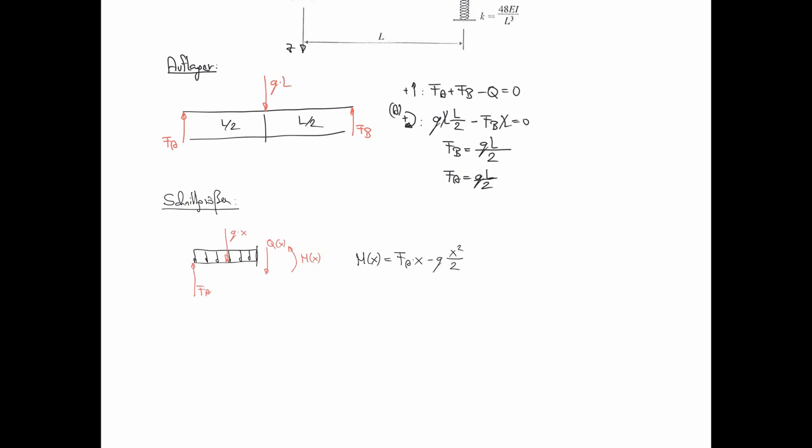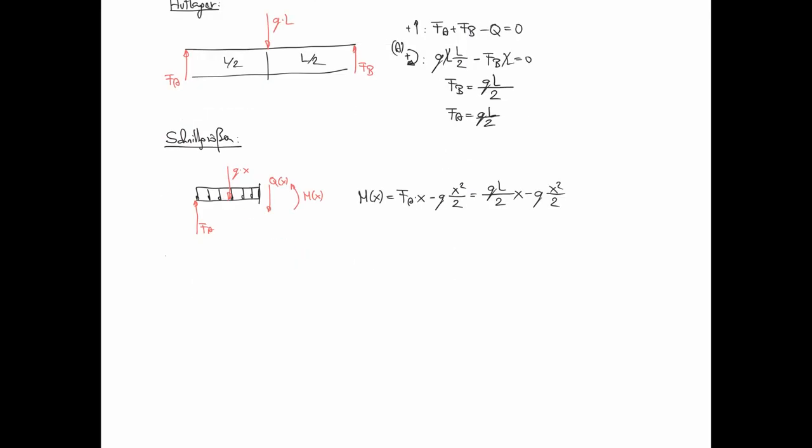Damit ist das M von X gleich FA mal X minus Q mal X mal X halbe, also X Quadrat halbe. Also FA eingesetzt: Q mal L halbe mal X minus Q mal X Quadrat halbe. Gleich auseinander getrennt lassen. Dann tut man sich beim Integrieren leichter. Deswegen Differenzialgleichung der Biegelinie zweiter Ordnung jetzt. Das EI W 2 Strich von X ist minus Schnittgröße M von X.